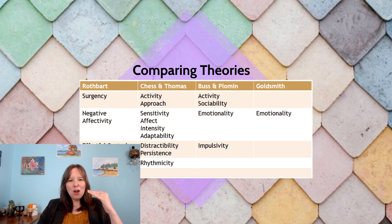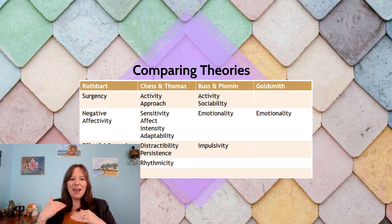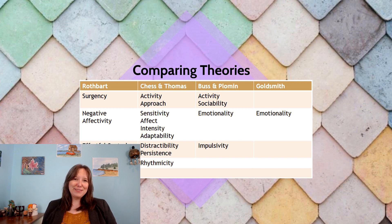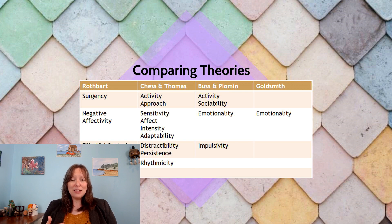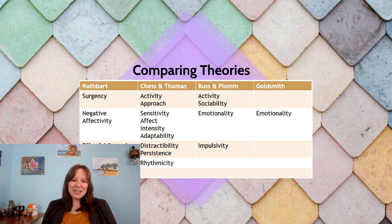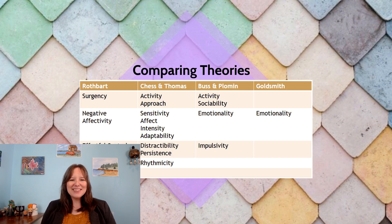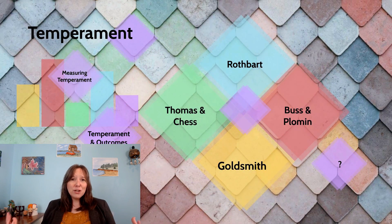With negative affectivity, we can see how this would overlap with domains of sensitivity, affect reactivity, or intensity and adaptability with Thomas and Chess. We can also see that overlap with emotionality in the other two theories of Buss and Plomin and Goldsmith. With effortful control, we can see how that would overlap with distractibility and persistence by Thomas and Chess, but also with Buss and Plomin's inverse impulsivity. The only one that stands out is rhythmicity — it doesn't quite fit; it could perhaps go with negative affectivity but not quite, and it seems to be its own thing.